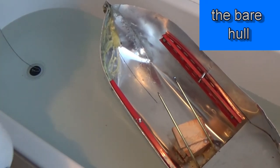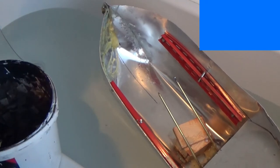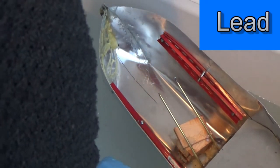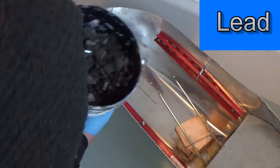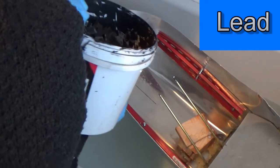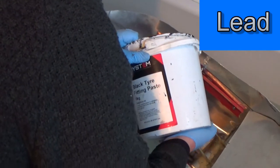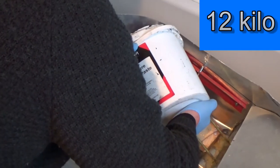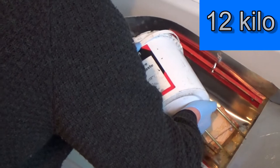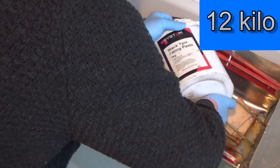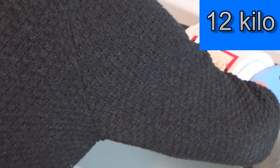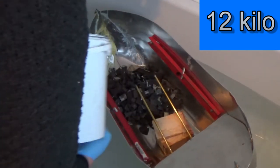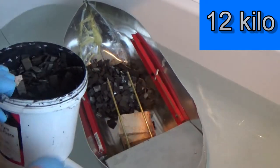Now it was just a case of using lead and pouring it in the areas I thought would keep it evenly balanced. This is 12 kilos of lead weights, normally used to balance wheels when you have new tires fitted.